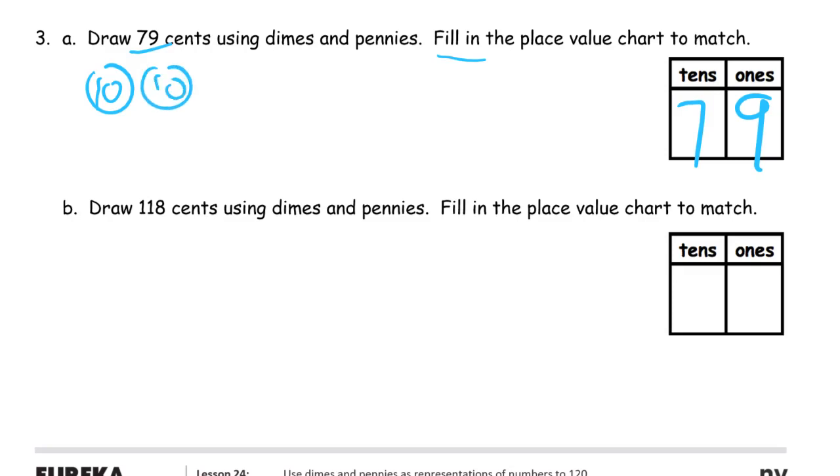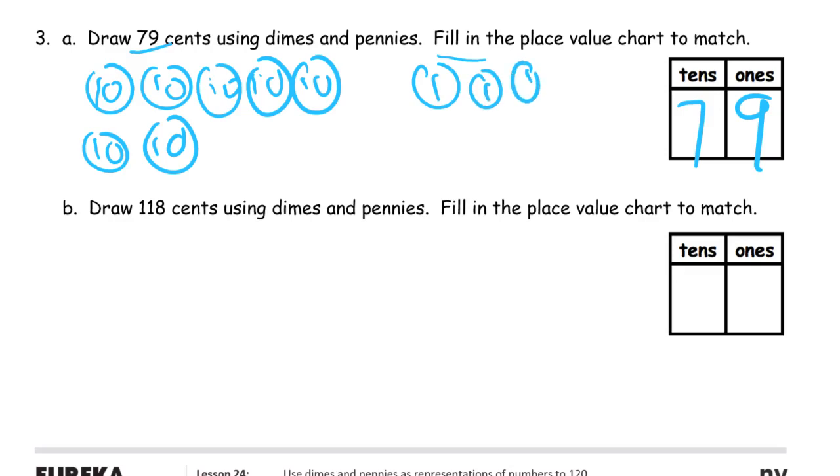I'm going to use 5 group rows so that this will look like 7 in a 10 frame. So there's my 7 dimes and 9 pennies. 1, 2, 3, 4, 5, 6, 7, 8, 9. Okay, that one's done.